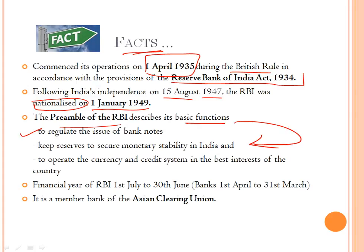The basic functions of the RBI are: to regulate the issue of banknotes, to keep the reserves, to secure monetary stability in India, and to operate the currency and credit system in the best interest of the country. Notably, the financial year of the RBI is 1st July to 30th June, whereas for other banks it is normally 1st April to 31st March. The RBI is also a member bank of the Asian Clearing Union.